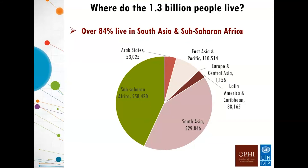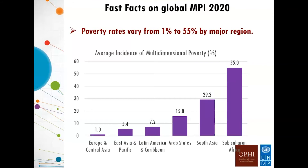84% of the global MPI poor live in South Asia and Sub-Saharan Africa, with similar numbers in the two regions. But the level of poverty — the proportion of people who are poor — is higher in Sub-Saharan Africa, where on average it is 55%, compared to South Asia's 29%. These averages, of course, hide high variety both between countries and within countries, between subnational regions.